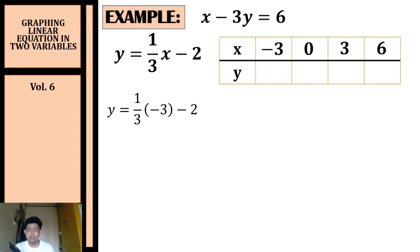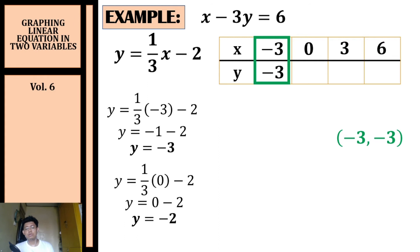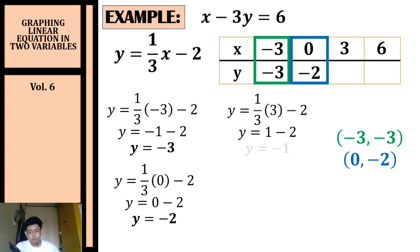Substituting x equals negative three: y equals one-third times negative three minus two, which gives negative one minus two, so y equals negative three — coordinate (−3, −3). Substituting x equals zero: y equals one-third times zero minus two, so y equals negative two — coordinate (0, −2). Substituting x equals three: y equals one-third times three minus two, giving one minus two, so y equals negative one — coordinate (3, −1).